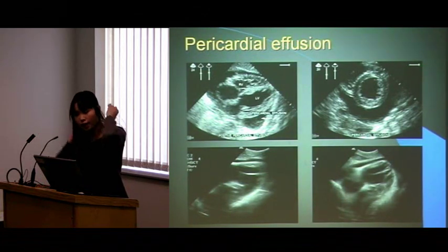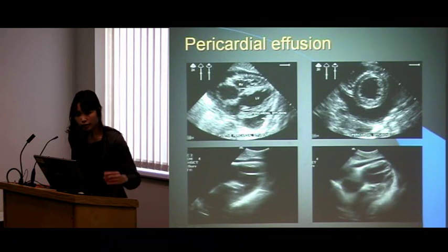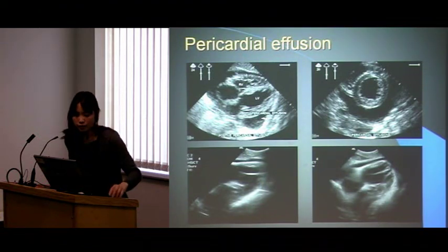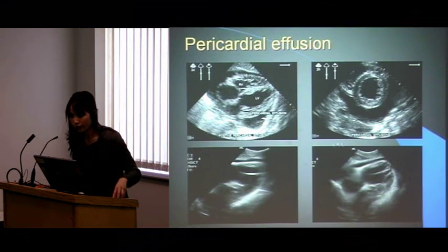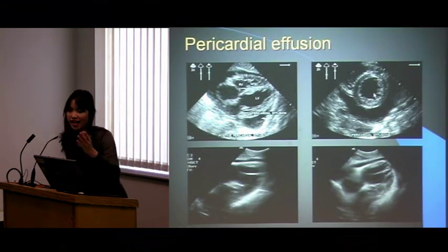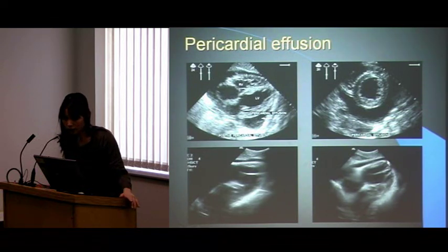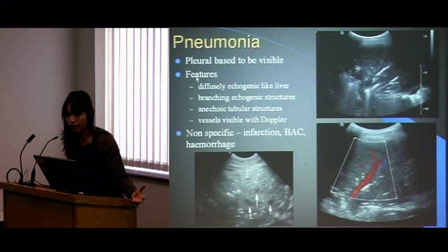Moving on to the heart: in a nice four-chamber view you can see all the chambers clearly, with the right ventricle and a slightly bigger, thicker left ventricle. Whereas before we saw a nice bright line around the heart, now there's black fluid between the pericardium and the heart — that's a gross pericardial effusion. Scanning in both planes you can confirm the pericardial effusion at the other angle.